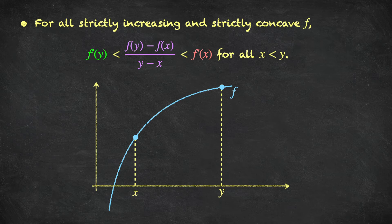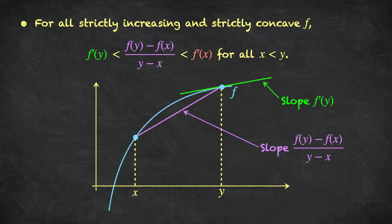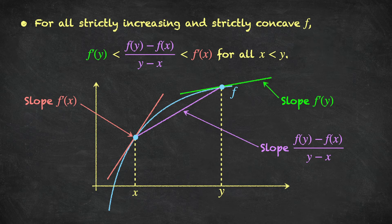Here's a graphical way to see this — we won't prove it, but the diagram gives the general idea. For a strictly increasing and concave function f, the green tangent at point y represents the derivative at y and is quite flat. Slightly steeper is the purple line, whose slope is [f(y) − f(x)] / (y − x) — rise over run. Steeper still is the red tangent, the derivative of f at x. The inequality is simply captured in this picture: the green tangent is flattest, the purple line is steeper, and the red tangent is steeper still.